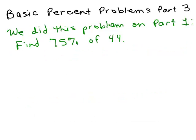We're going to go on to a different kind of percent problem, but first let's look at this problem we did on part one: find 75% of 44. Another way this could have been asked is what is 75% of 44. The way we did this is if we know the percent and it says of the number, we multiply. We take that percent, write it as a decimal or as a fraction, and then times it by the number to get our answer.